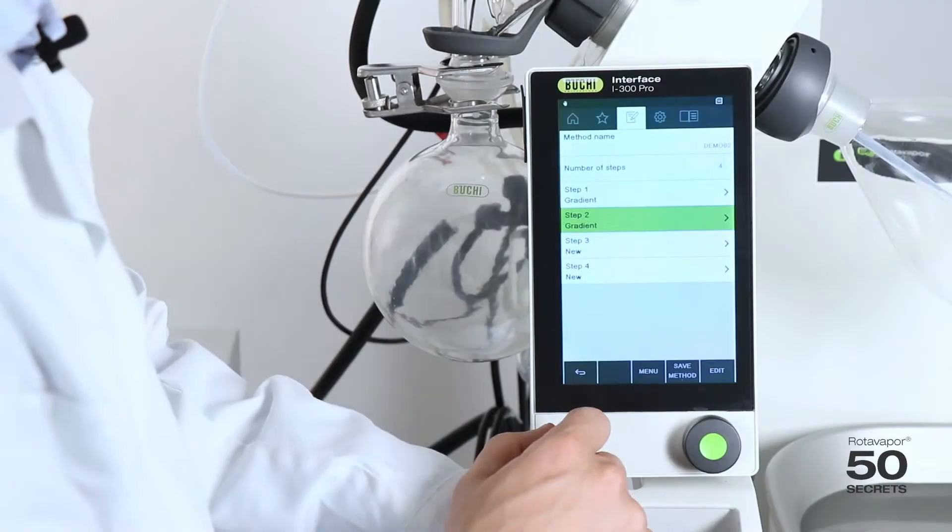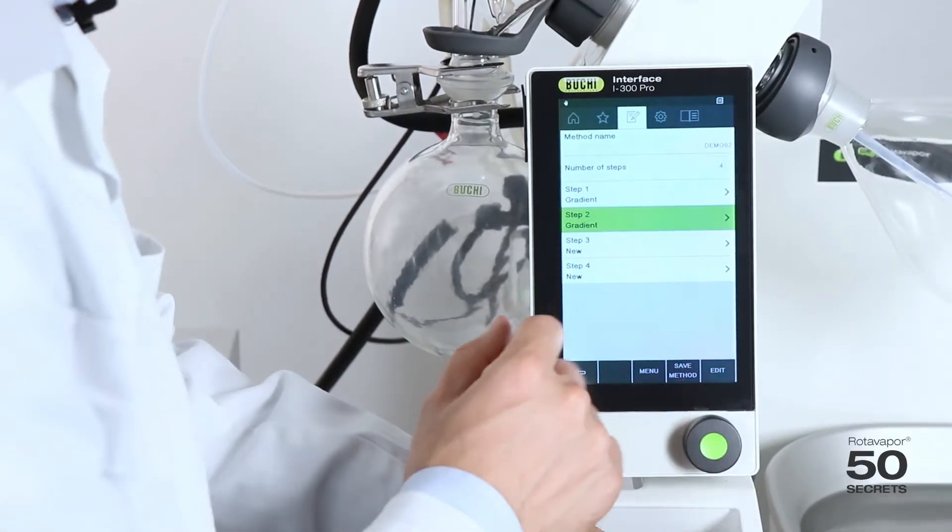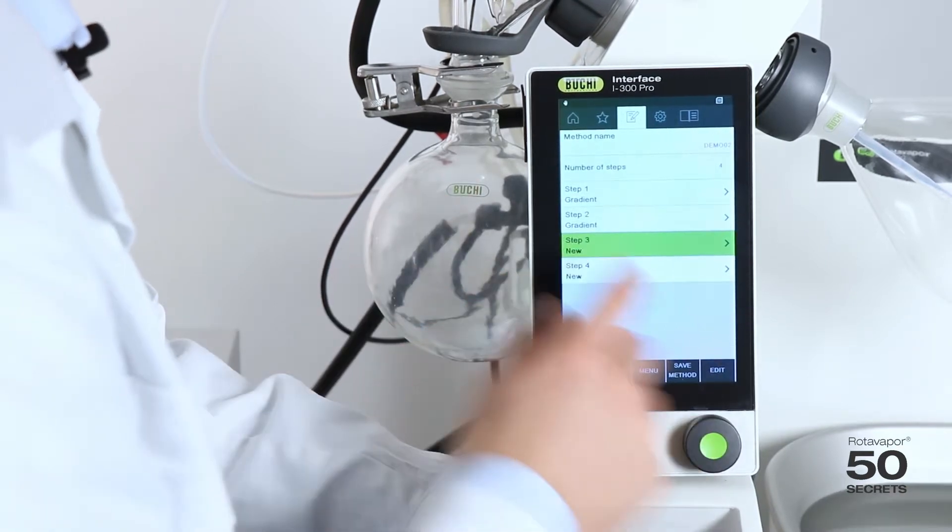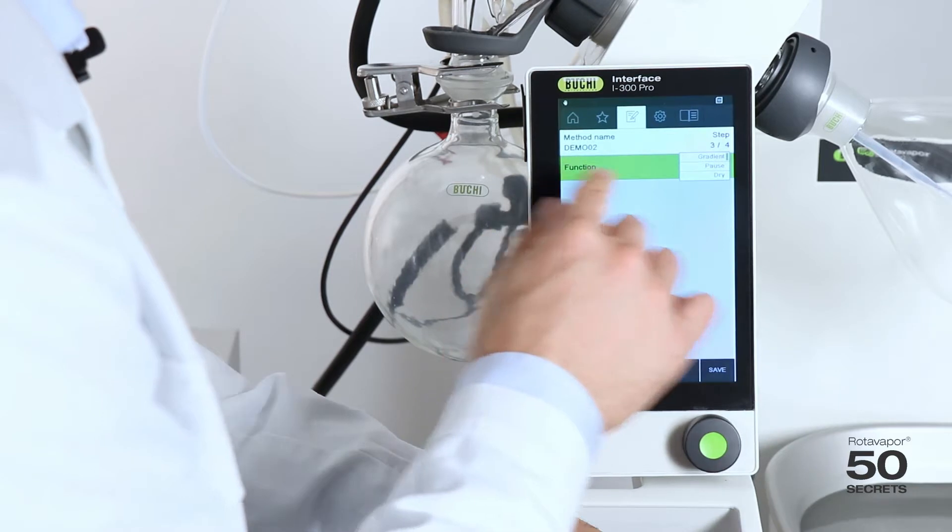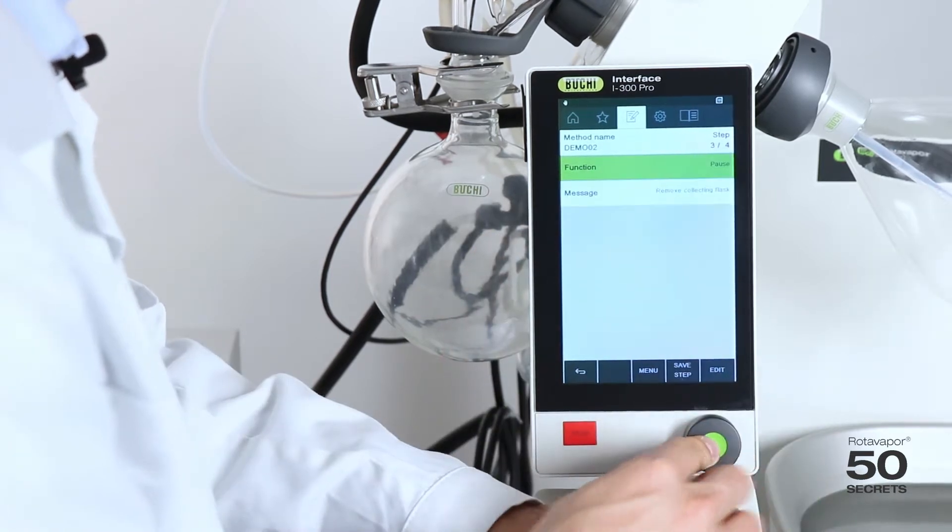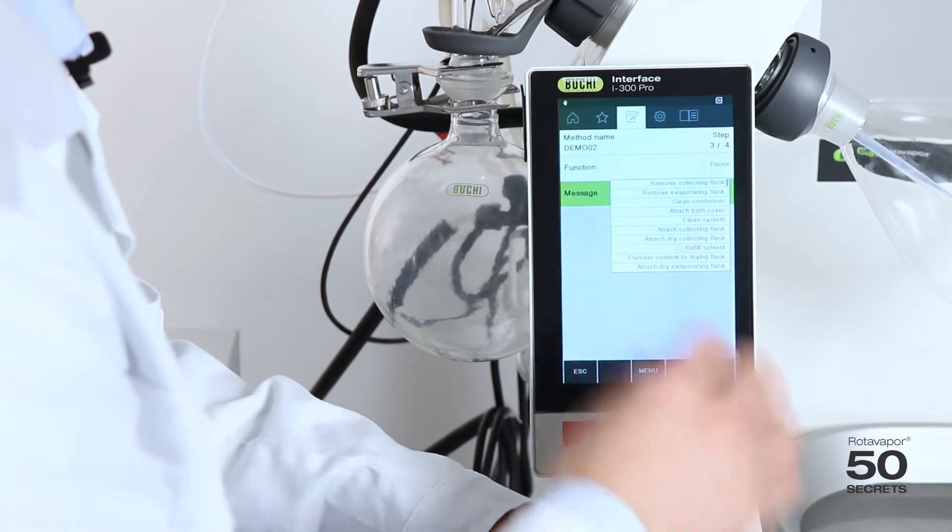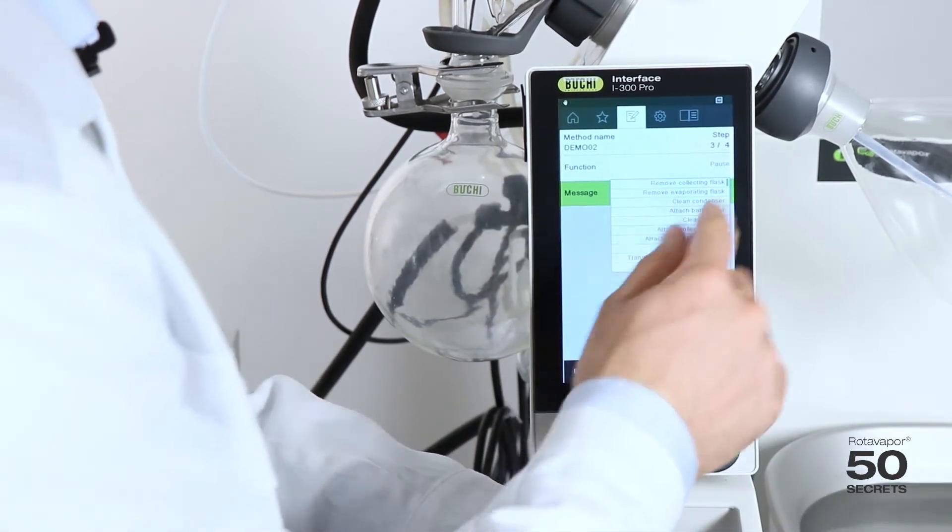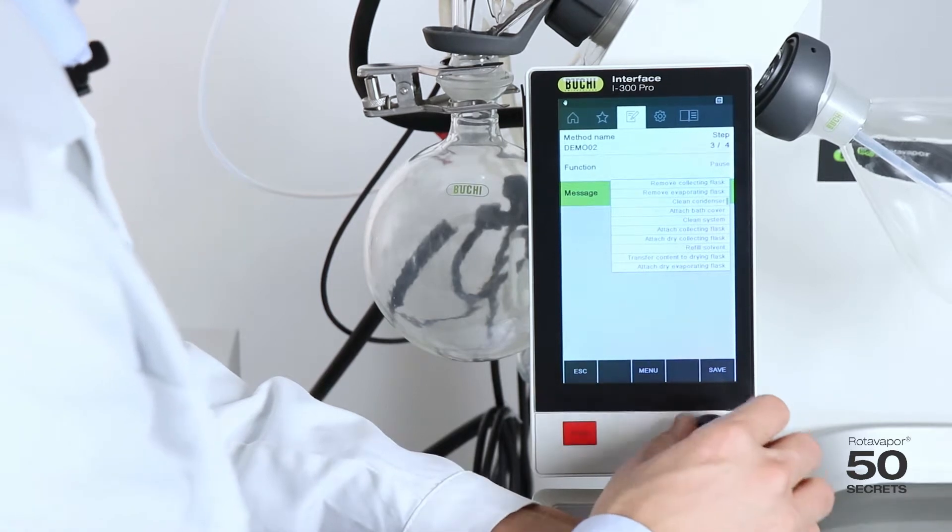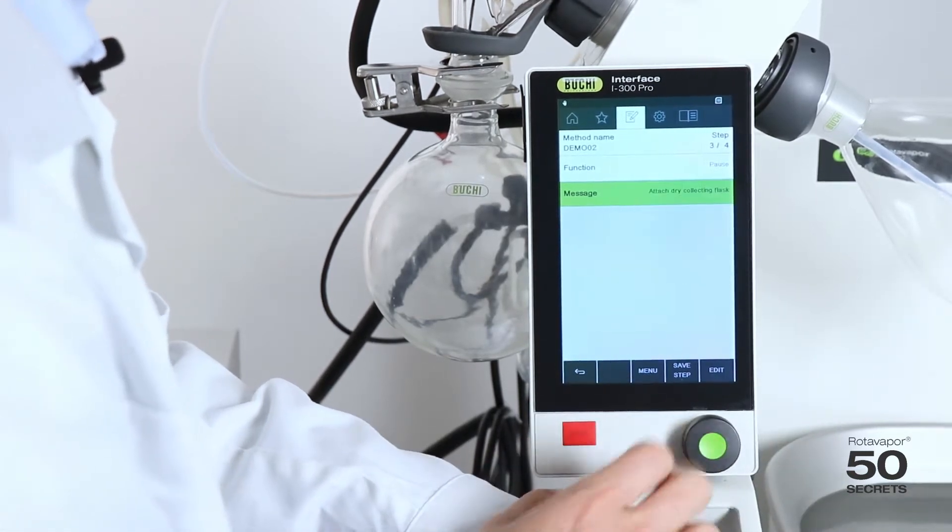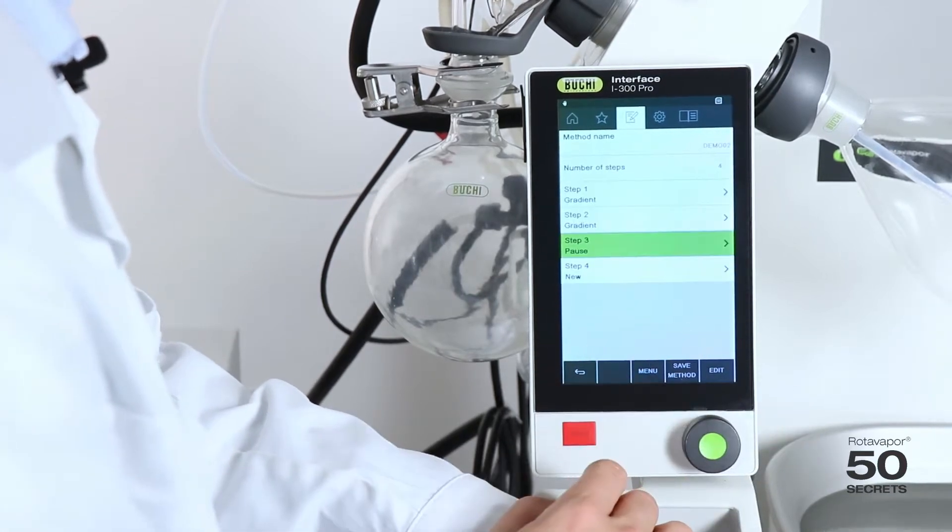The third step now is to replace the receiving flask. For that reason we choose the function pause. We can choose from a number of messages. For example, remove collecting flask, cleaning condenser or attach dry collecting flask. We choose that. We save the step.